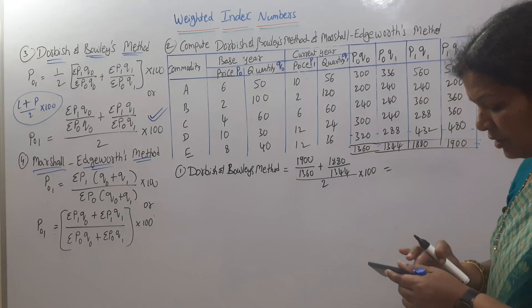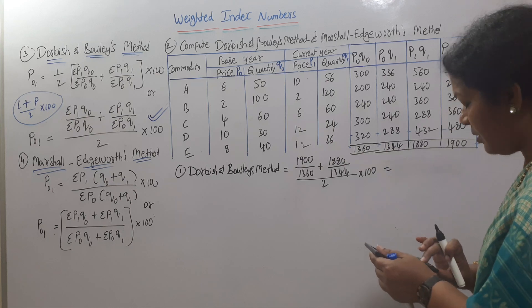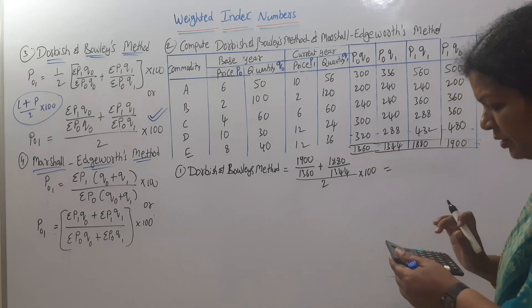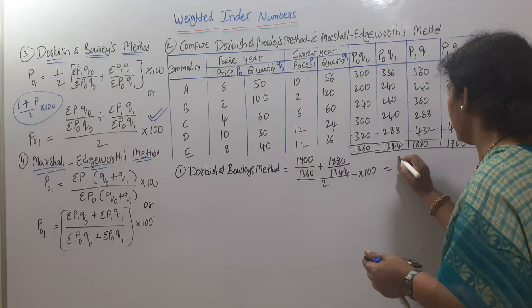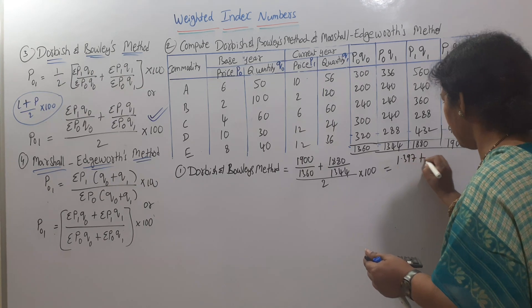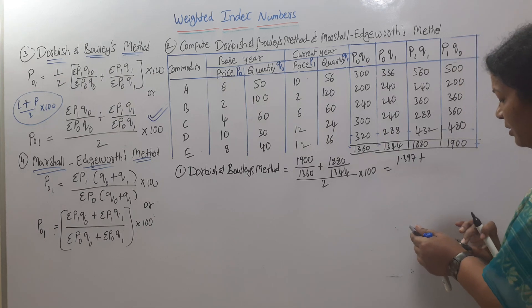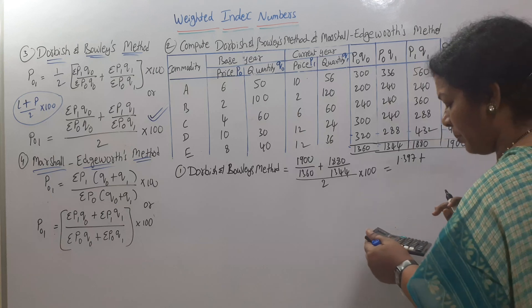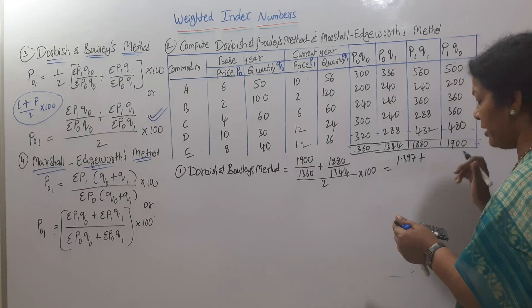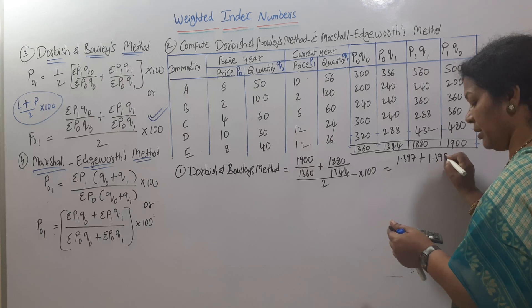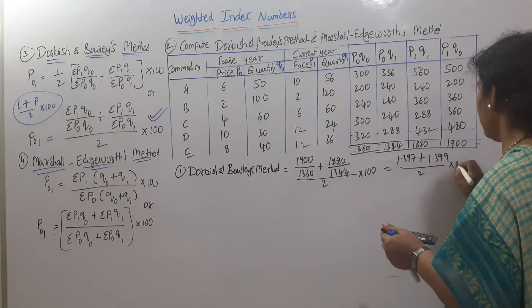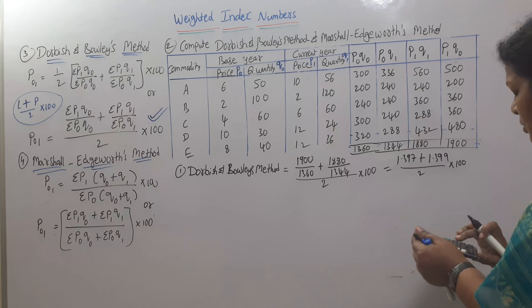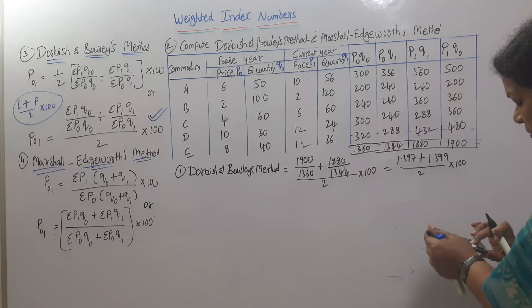1900 divided by 1360 equals 1.397. Plus 1880 divided by 1344, which comes to 1.3988, or 1.399, divided by 2 into 100.